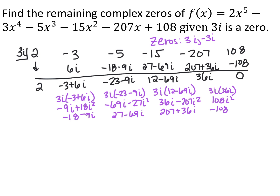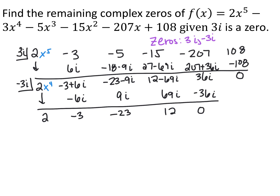Multiplying 12 minus 69i by 3i gives 207 plus 36i, which cancels the negative 207, leaving 36i. Times 3i ends up being negative 108, so we do get a remainder of zero. This was an x to the fifth, so it reduced to an x to the fourth — a bit weird with imaginary numbers in it, but we have the other zero, negative 3i. On this reduced polynomial I do synthetic division with negative 3i. Multiplying gives negative 6i, which cancels with the 6i; negative 3 times negative 3i is 9i, canceling the negative 9i; continuing through, all imaginary parts cancel, and we end up with a remainder of zero, confirming negative 3i is a zero.